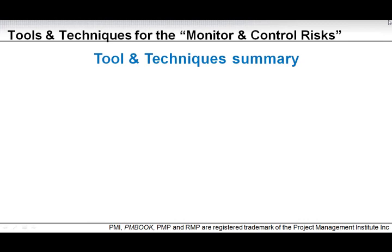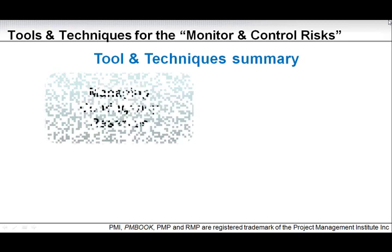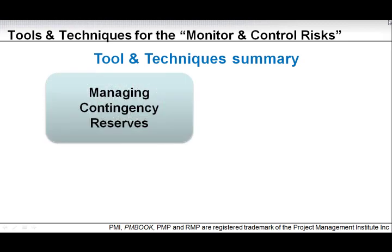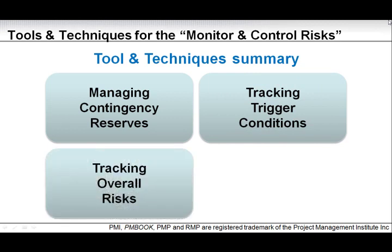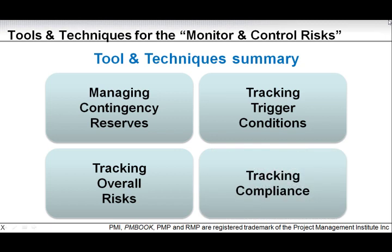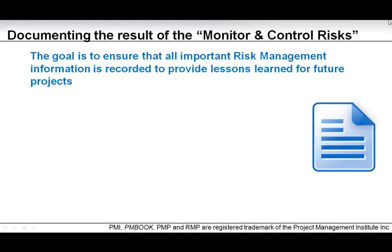Before we close this chapter, here is a tool and technique summary of monitoring and control risk. The four key cornerstones of the monitoring and control risk process are: managing contingency reserves, tracking trigger conditions, tracking overall risk, and tracking compliance. This is really what we expect the process to deliver.